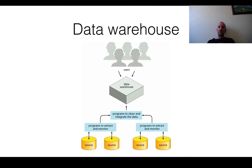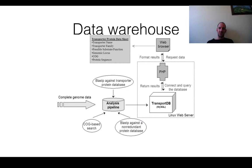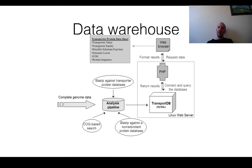These data are normally stored in data warehouses — essentially a big computer holding everything together. There are database administrators who maintain and access the databases. Nowadays the normal user access is through a web interface, but there are also ways to access databases directly via computer programs. For example, the TransportDB is a database of transport proteins. Here you have genome data, you do some analysis, and programs determine which proteins in the genome are transport proteins. Those are put into the transport database, annotated in various ways, and then there is a PHP-based web interface through which a user can search — for instance, for all glutamine transporters — and get results listed, including sequences and structures.